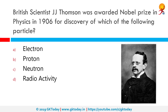British scientist JJ Thomson was awarded the Nobel Prize in Physics in 1906 for the discovery of which of the following particles? The correct answer is Electron. Sir Joseph John Thomson was an English physicist and Nobel laureate credited with the discovery and identification of the electron, the first subatomic particle to be discovered.